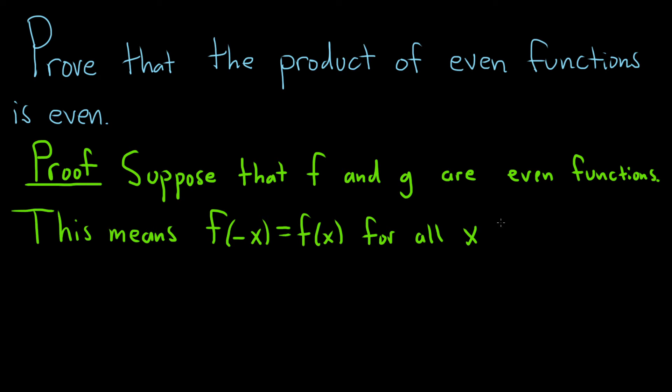So this is what it means for f to be even. And we also assumed that g was even, so that means g of negative x is equal to g of x, and this is also true for all x.